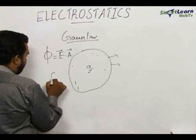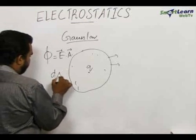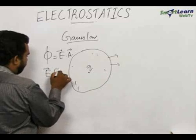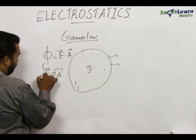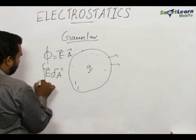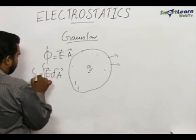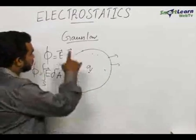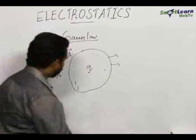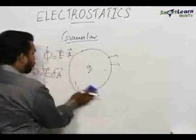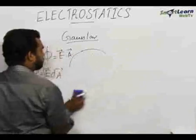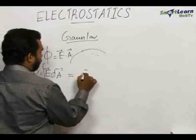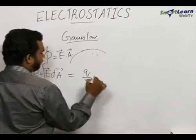The problem is the electric field is not the same at all points of the surface. So we have to take a small area where the electric field is E and integrate through the whole surface, which gives the total flux. According to Gauss's law, the total flux through any closed surface is equal to Q by epsilon zero.